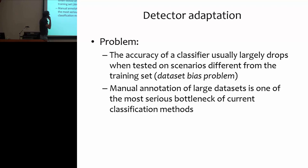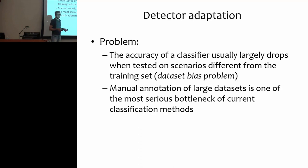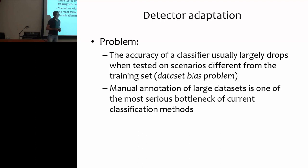The problem is this: as you probably know, if you have a classifier which is trained on a specific dataset with a specific setting, and then you test this classifier on another dataset, you usually observe a drastic drop of performance, because the training dataset does not represent all the variability of the class that you want to recognize. When you go to another setting with a different image resolution, different viewpoint, and so on, you usually have a drastic drop of performance.